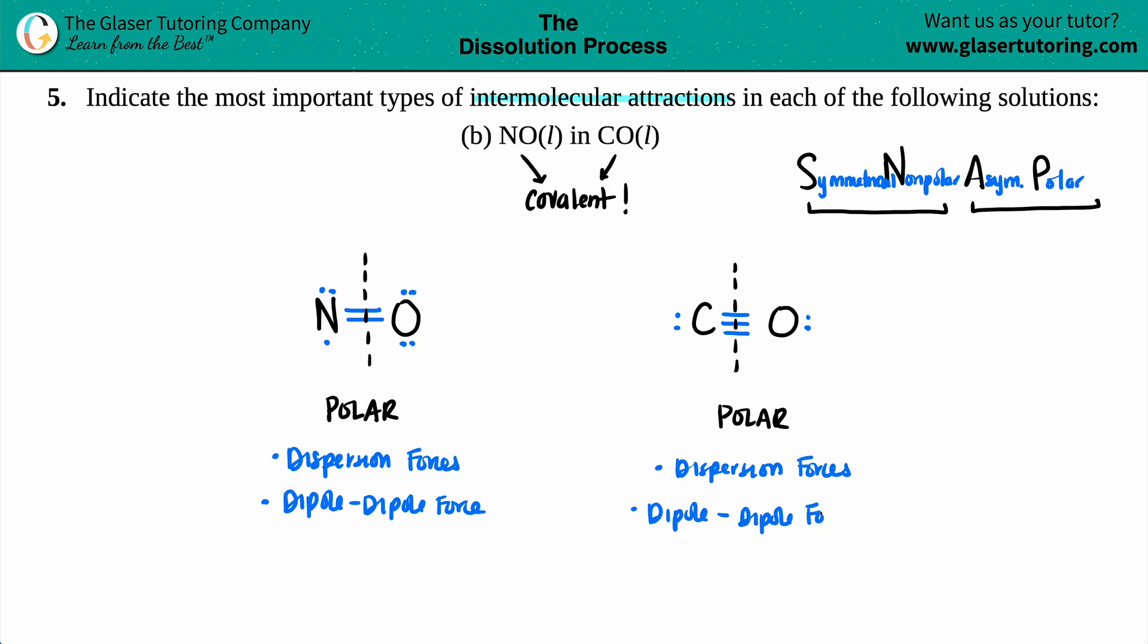The last one is hydrogen bonding. Remember, hydrogen bonding—you have to have an OH, an HO, an HN, or an HF bond. But I have no hydrogens here, so I can't have any hydrogen bonding.